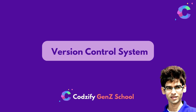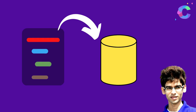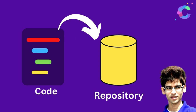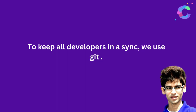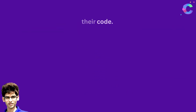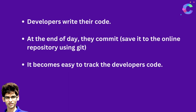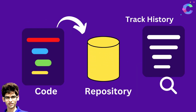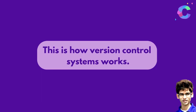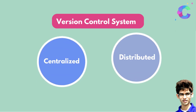Git is a very common term used in the developer community. It is called a version control system. In big tech companies like Google or Amazon, or even in small companies, developers work on the same project. Git helps with synchronization — developers write their code and at the end of the day commit it to a central repository. This makes it easy to track which developer wrote which code, and a history is maintained for each committed change.